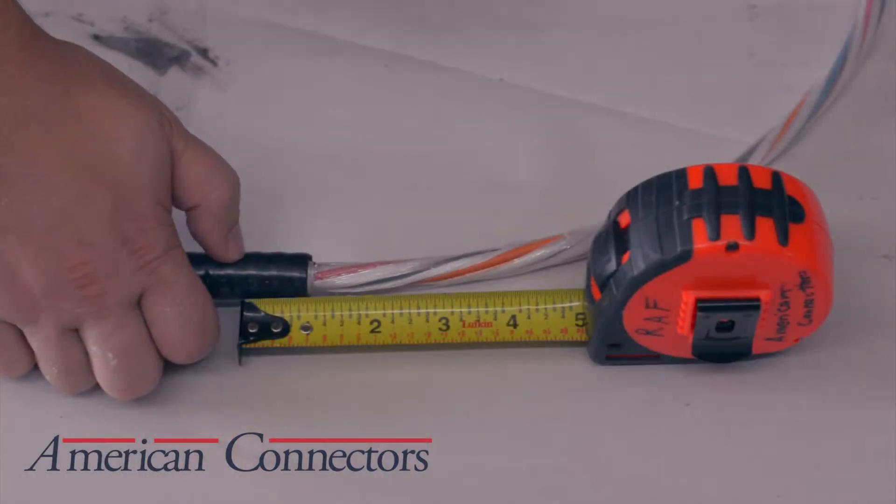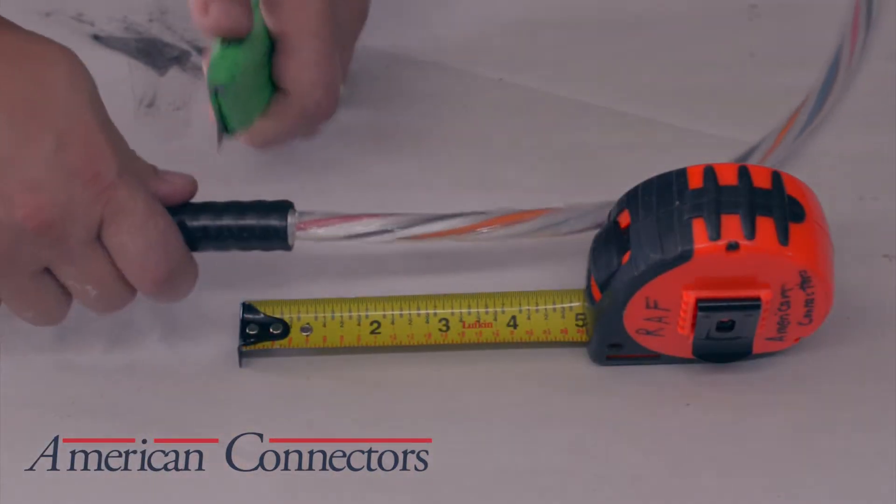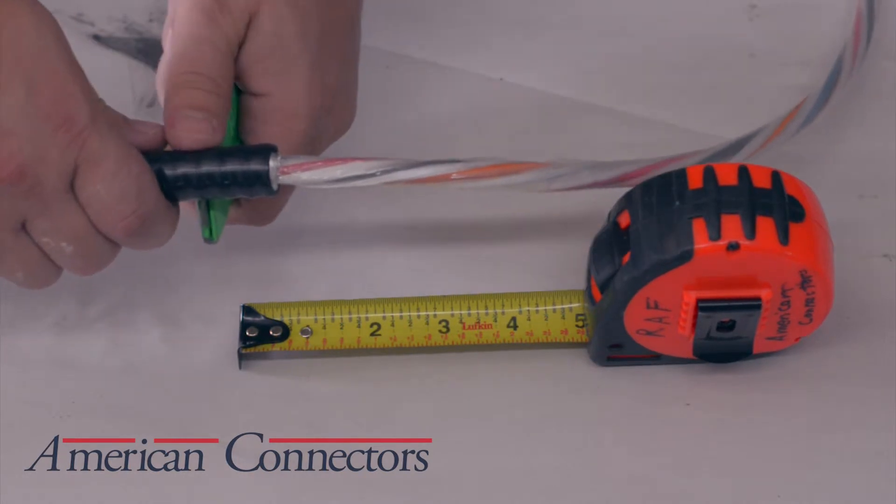Measure 7/8ths back from the remaining armor and remove the jacket, exposing 3 convolutions of armor.